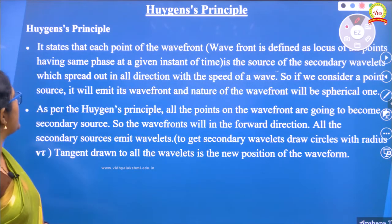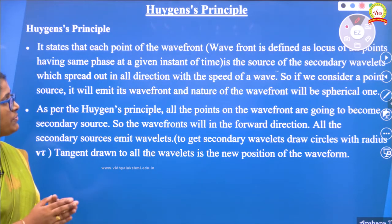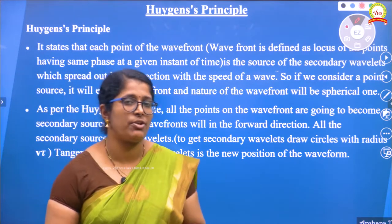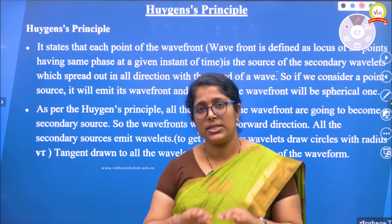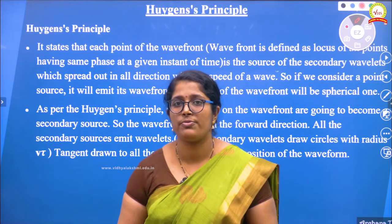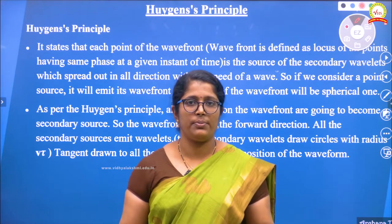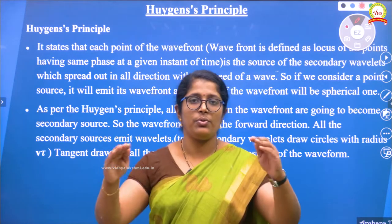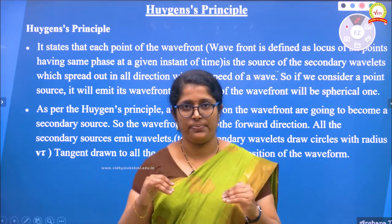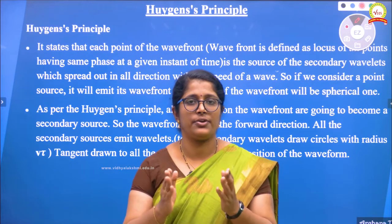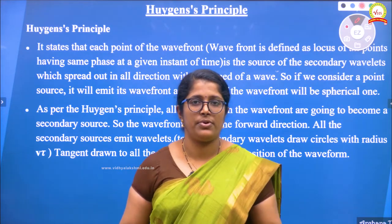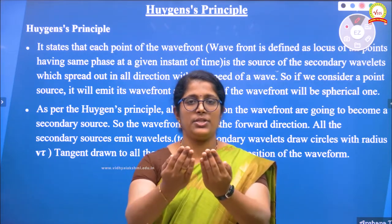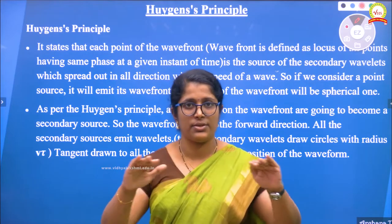Huygens principle states that each point of the wavefront acts as a source of secondary wavelengths. First of all, we have to see what is a wavefront. It is defined as the locus of all points having the same phase at a given instant of time. For example, if we consider ripples of water — that is also another form of a wave. Ripples of water means there is an origin and a few wave forms are created. At some instant of time, a few points are there which are of the same height. These set of points which are in the same excited positions, together form a wavefront.